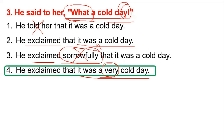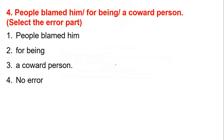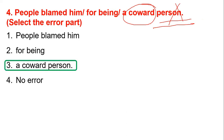That's why he exclaimed that it was very cold — this is the appropriate answer. Next: people blamed him for being a coward person. So I'm talking about error correction. We have to identify that you cannot blame on a person — we will not blame others. The question is about the word 'coward.'